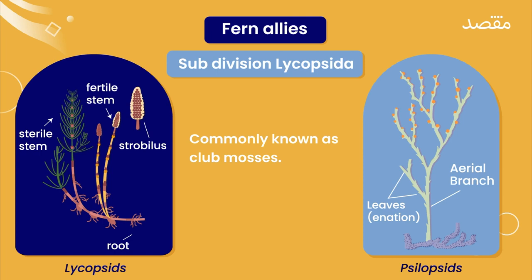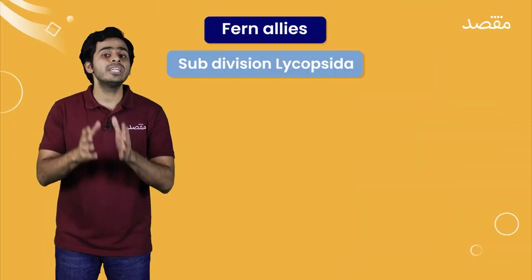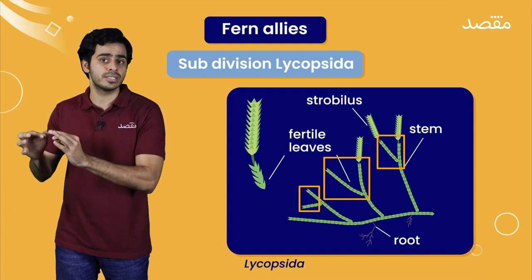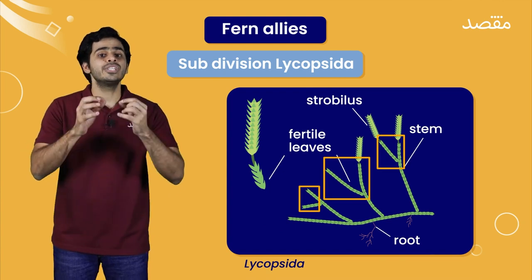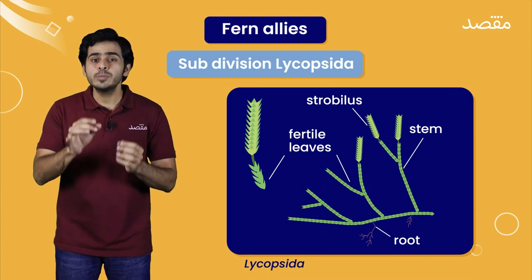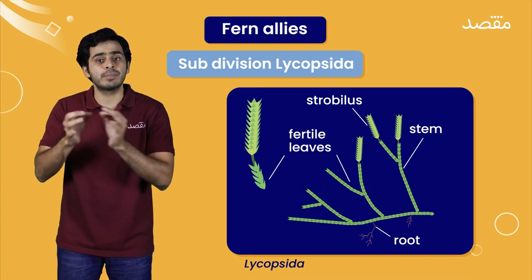Lycopcida on the other hand are the first plants which have true roots. Generally, yeh maana jaata hai that these roots were developed when their ancestors, algae, penetrated in the soil and formed branches underground. Lycopcida ki shoots ki baat ki jai, to they have dichotomously branched shoots. Yarni ki their shoots are divided into two branches. In shoots peh, chho'te chho'te kaan'te-dar leaves present hoote hain.